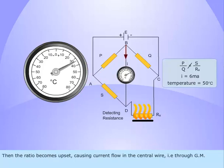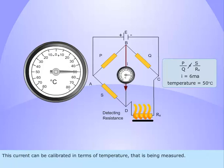Then the ratio becomes upset, causing current flow in the current wire, i.e. through the galvanometer. This current can be calibrated in terms of temperature that is being measured.